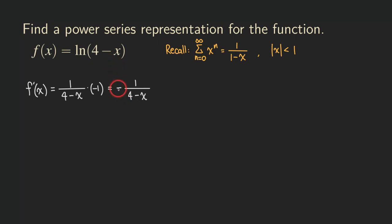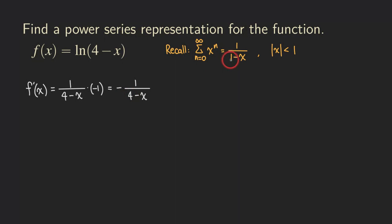The negative one is just a constant in front of the function. We have one in the numerator, but there's a problem — there's a four in the denominator, and we need a one there to use the geometric series formula. So we need to factor out the four.